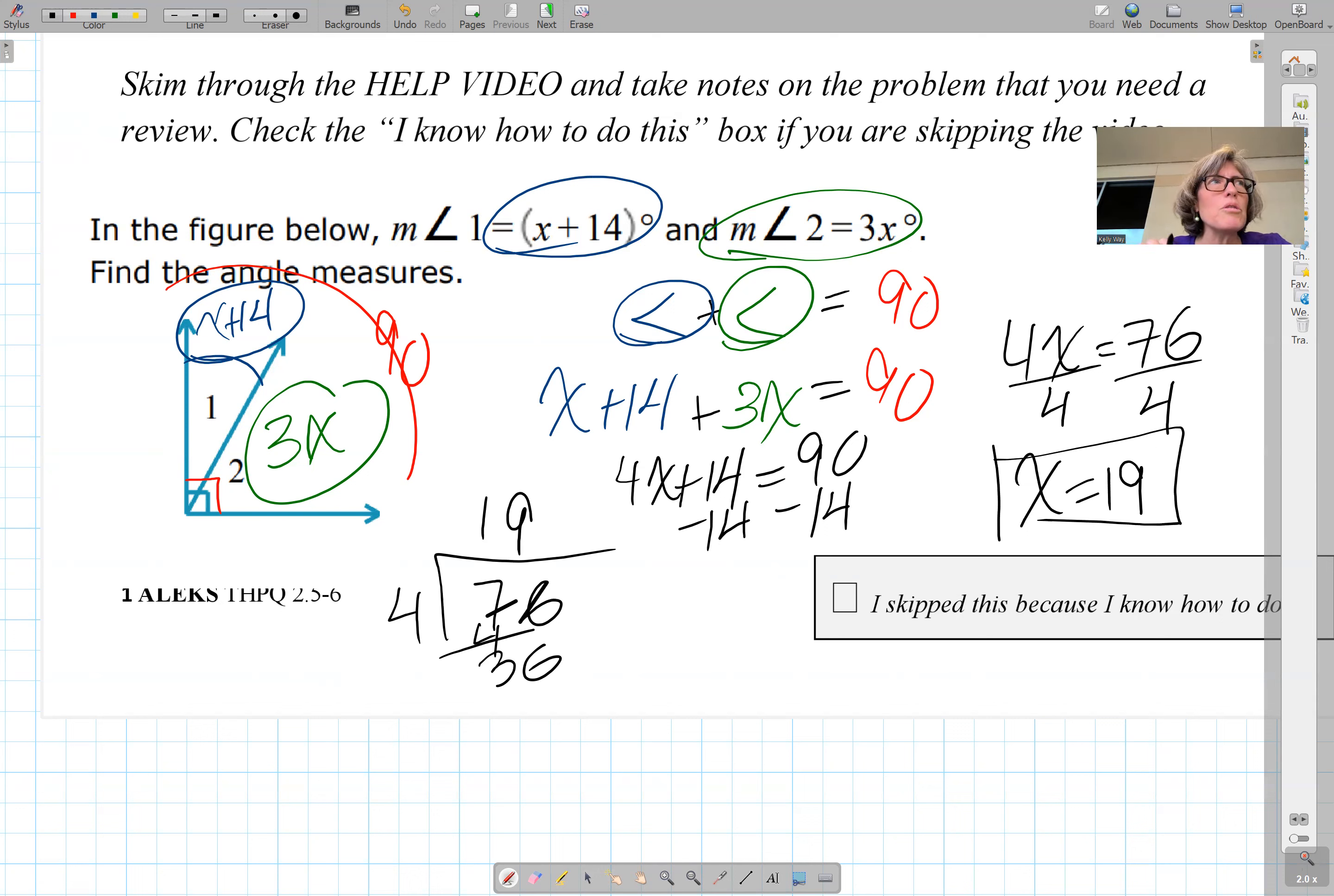But you're not in algebra class. You always do something with x. You don't end at x. So we're going to come over here. We have 19 plus 14, that's 33 here, and then 3 times 19 is 57, and you check, 33, 57, add them up and check you have your 90 degrees.